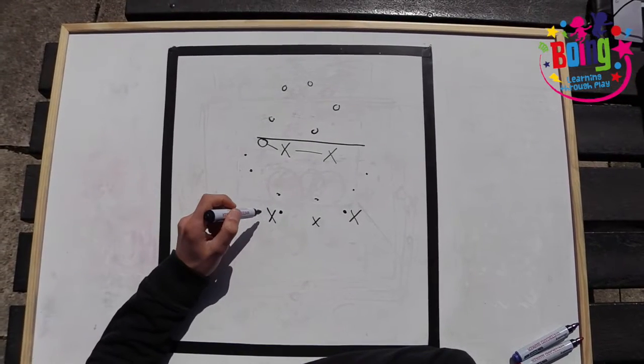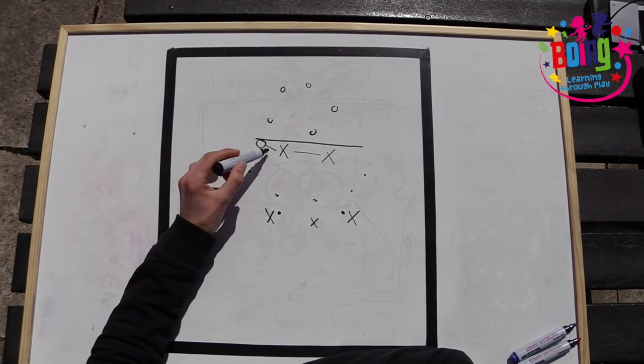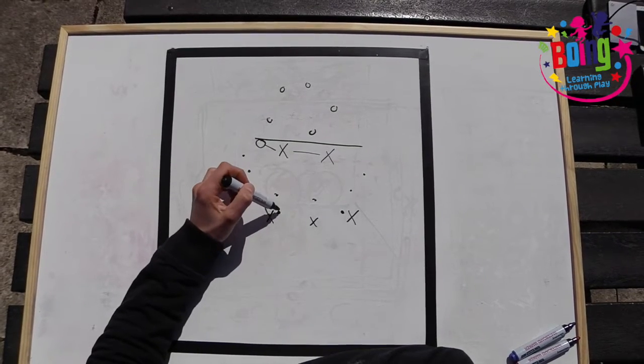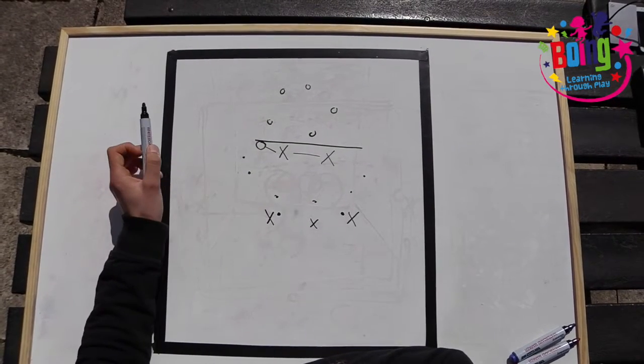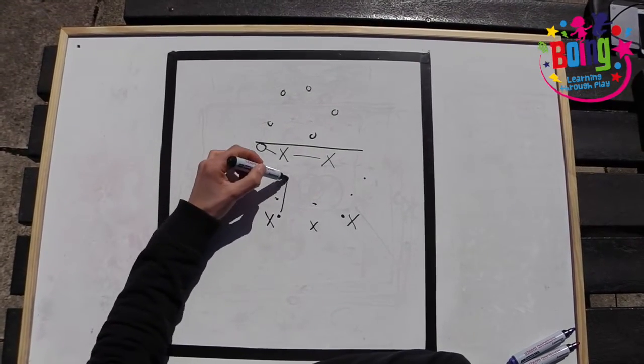On the word go, the target attackers must attempt to hit the target and the savers must try and stop the ball from doing so. The game is complete when the target attackers have hit the target ten times.